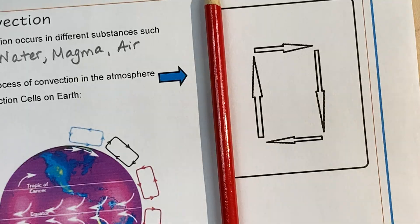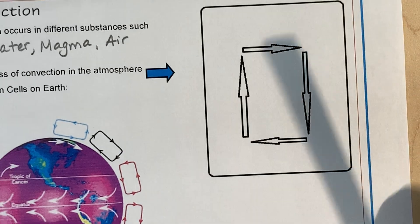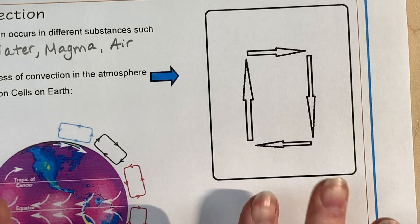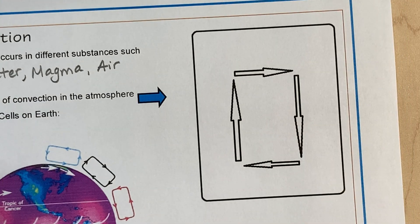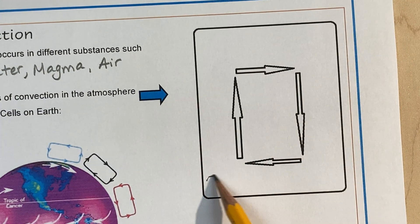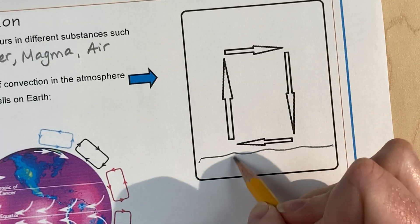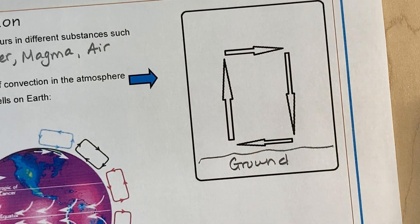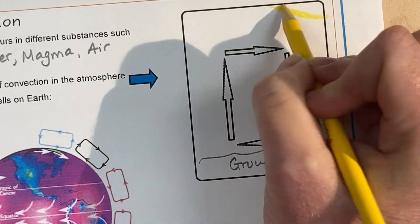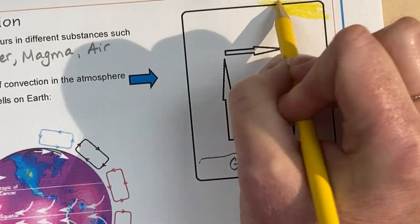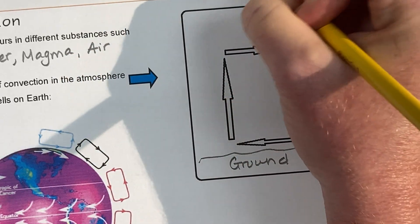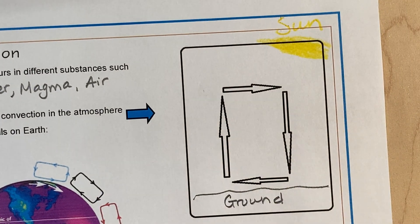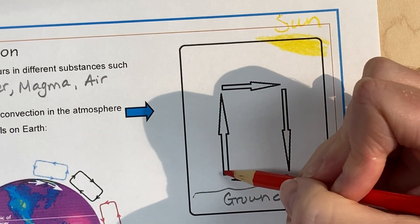What happens here is if we're talking about air, so if we have air currents, we can draw the ground here. And it's going to heat up the air. Warm air rises.